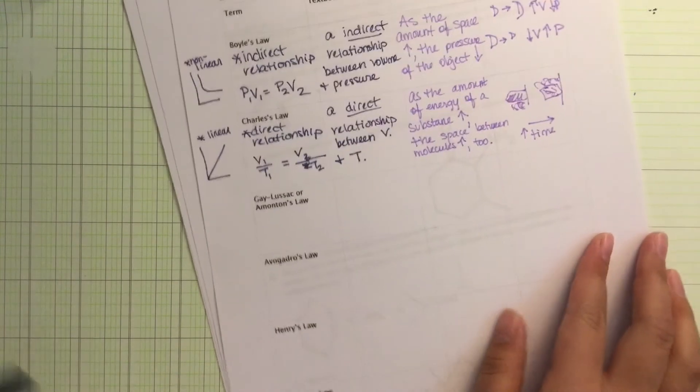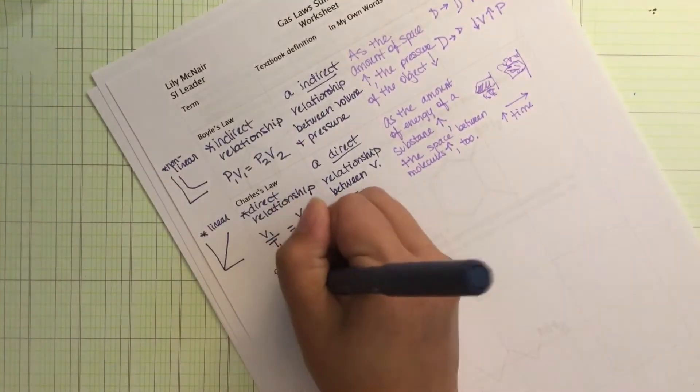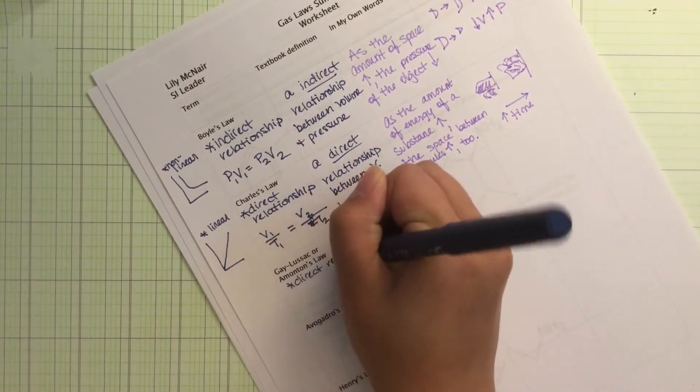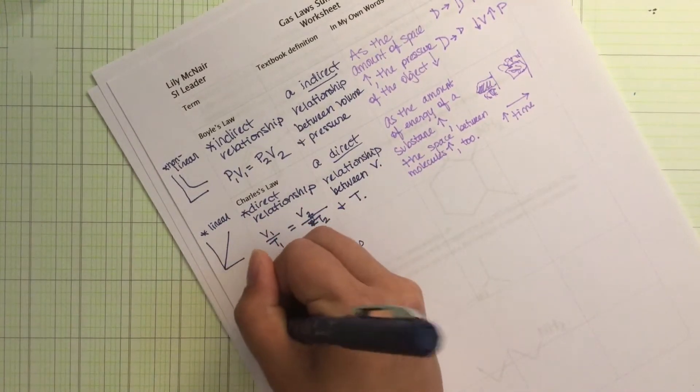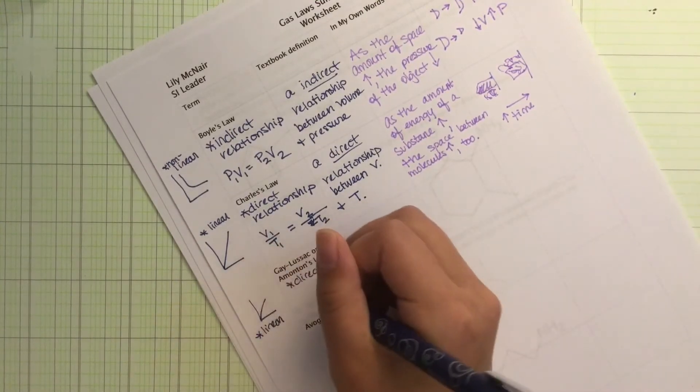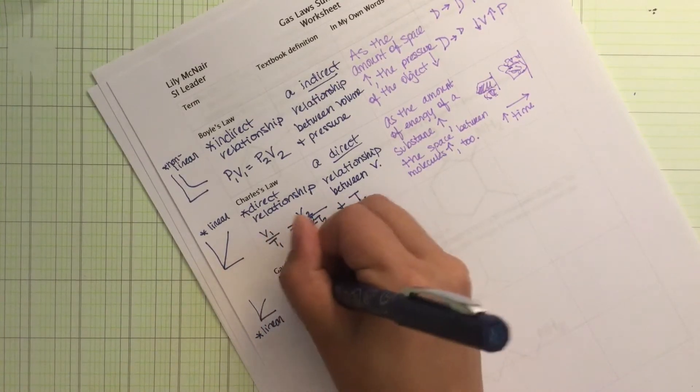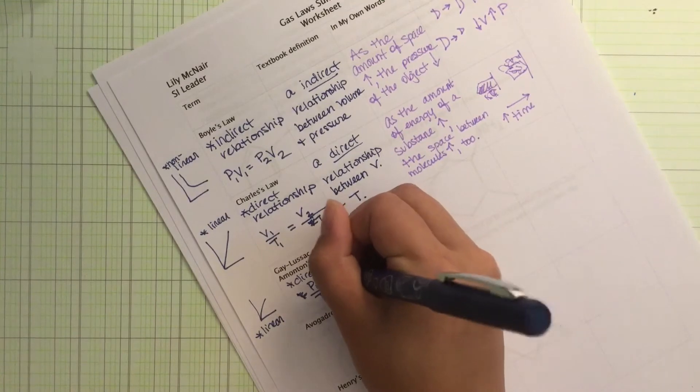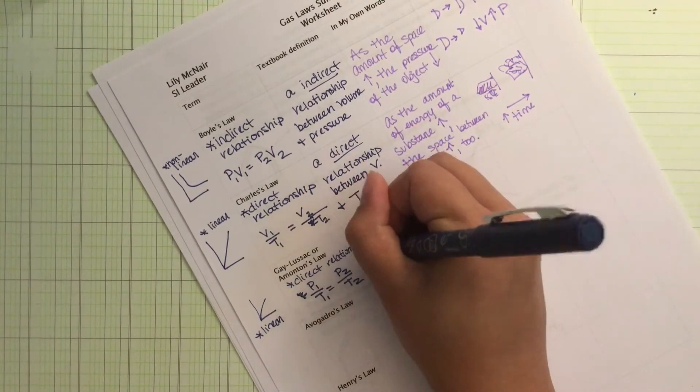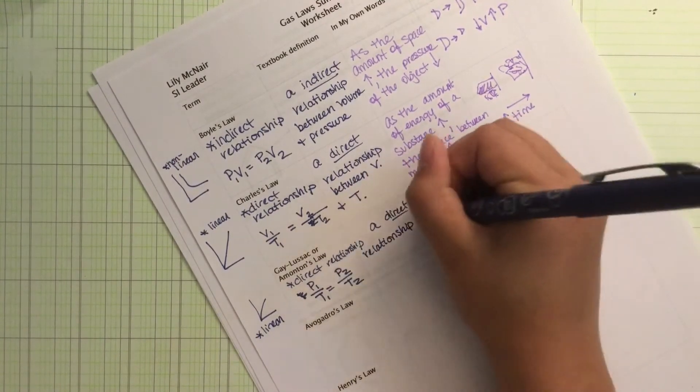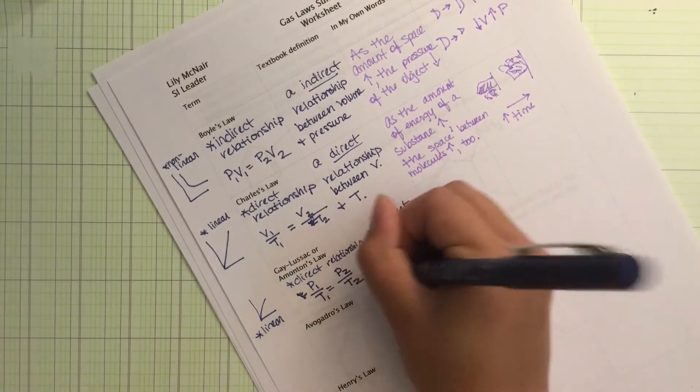Now we also have Gay-Lussac or Amontons. So this is the third one. Either one works. This is also a direct relationship. So we're going to see the graph looking like this. This is linear. And this will be P1 over T1 equal to P2 over T2. So a direct relationship between temperature and pressure.